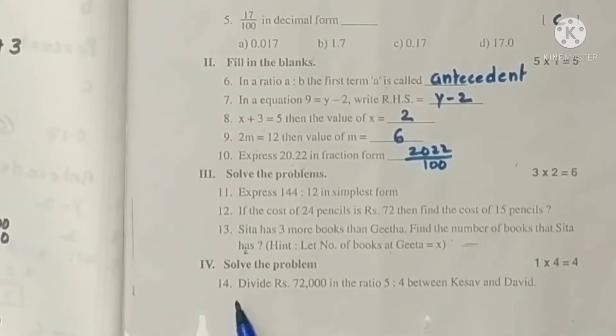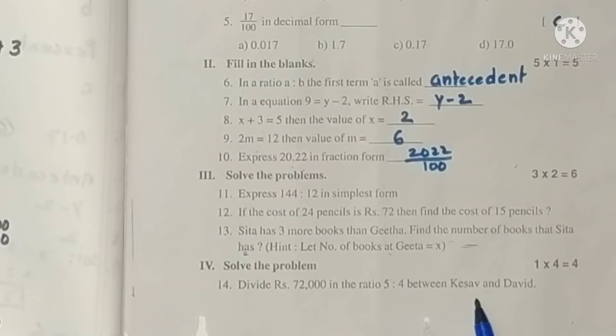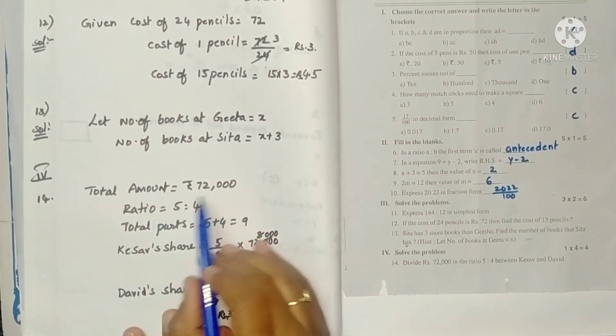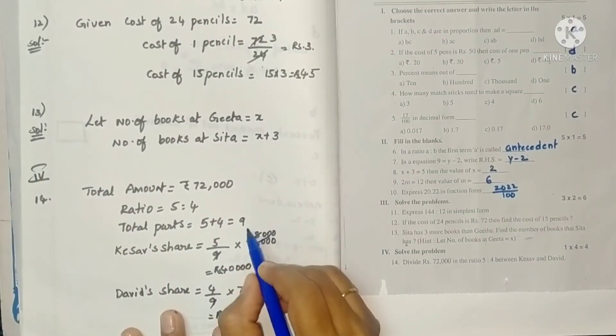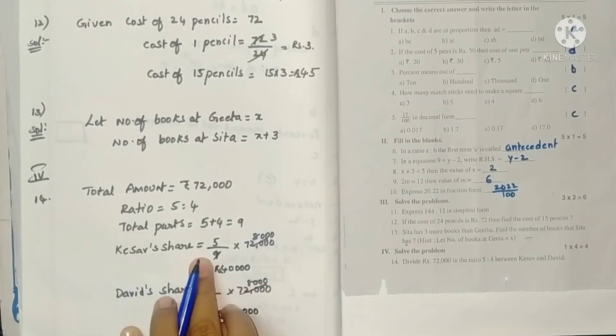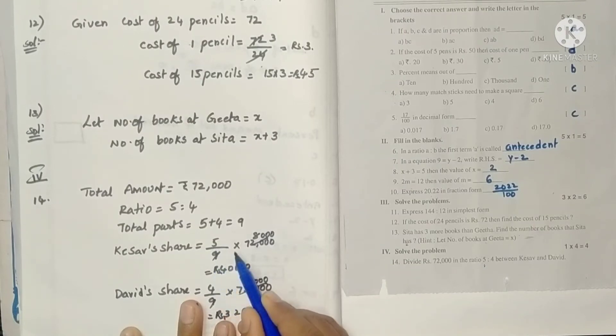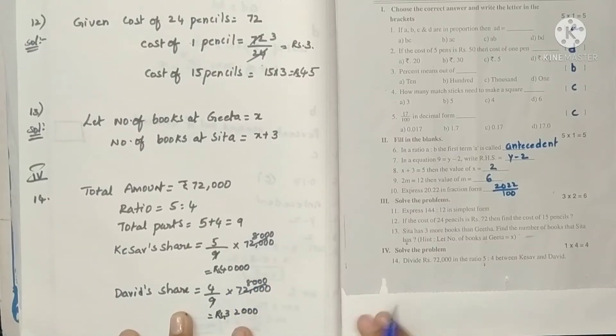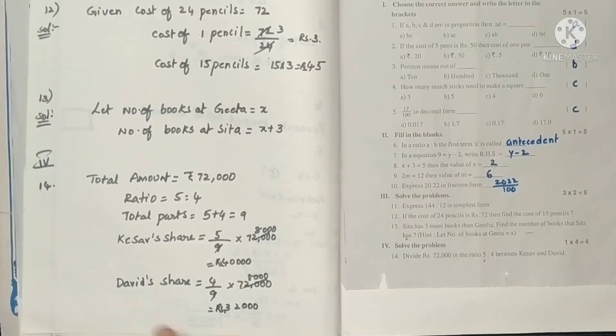Next, last Roman 4, 14th question. Divide rupees 72,000 in the ratio 5 is to 4 between Kesev and David. So we write the amount. Ratio and total parts. 5 plus 4 is 9 parts. Right? So Kesev's share, the first one is Kesev's, so 5 shares. 5 by 9 into 72,000. 9 eights are 72, so 5 eights are 40,000. And David's share 4 by 9 into this, so 32,000.